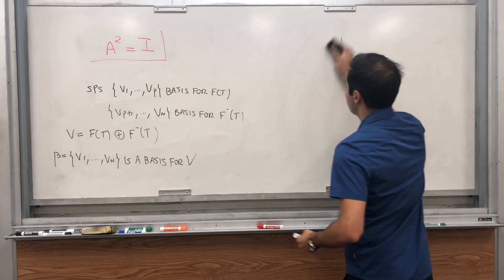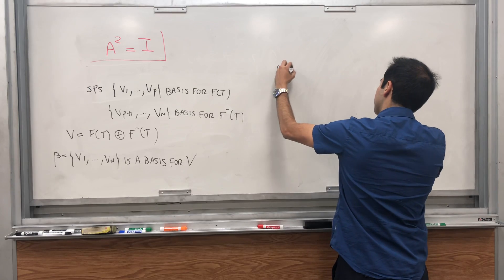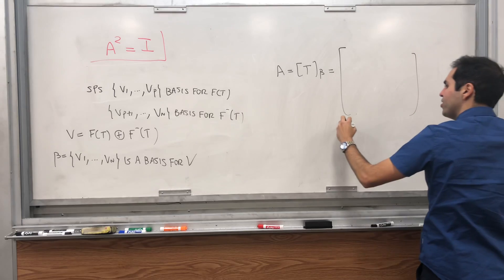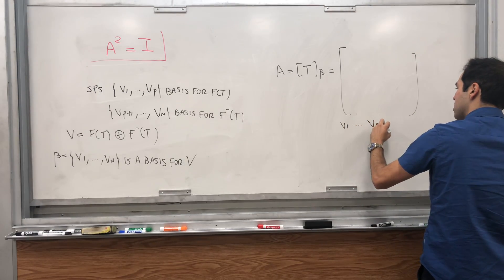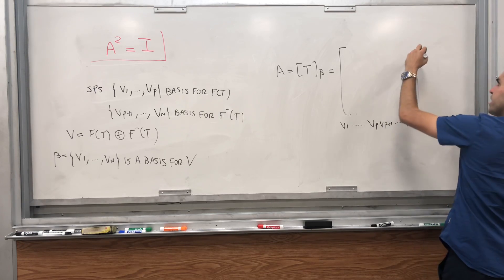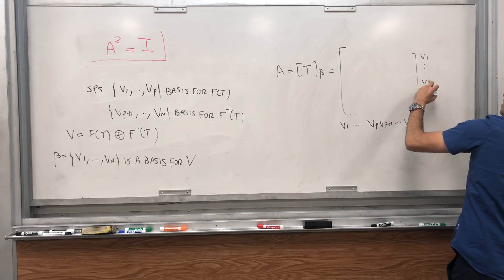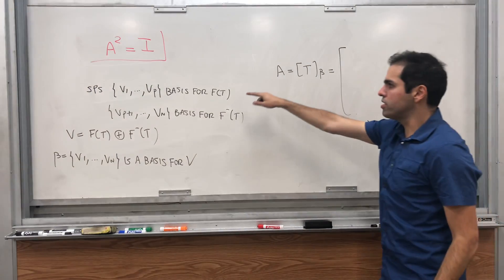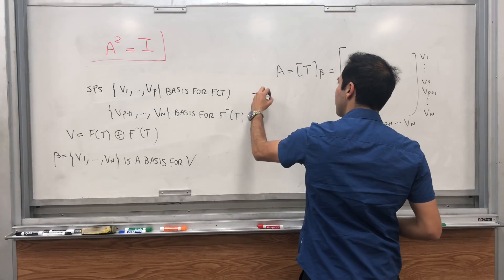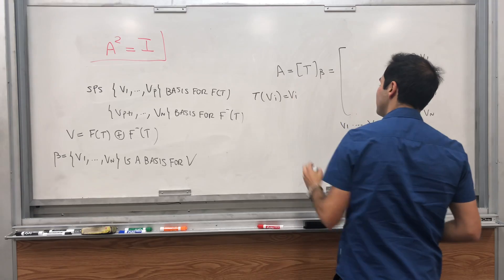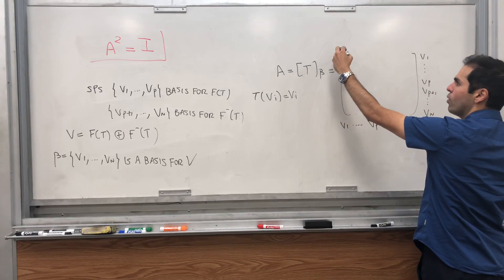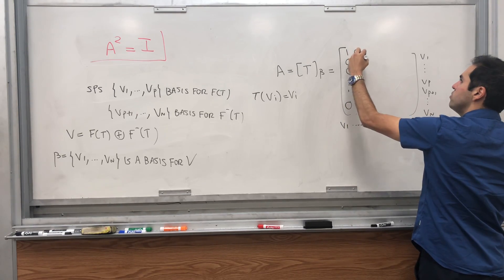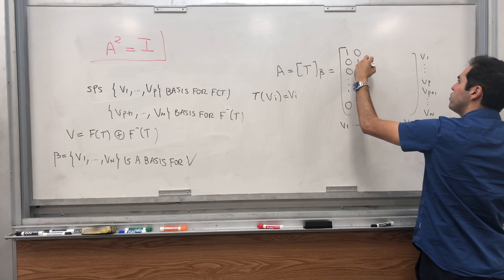Then because it's a direct sum, it turns out, beautiful fact, if you put those two bases together you get a basis for V. So beta, which is V1 up to Vn, is a basis for V. And then we can simply calculate the matrix of T with respect to that basis. And how do you do this? Remember A, which is the matrix of T, you just evaluate T at every basis vector and write this in terms of your basis vectors Vp, Vp+1, da da da, Vn. Now what does T do to the first p vectors? Well it literally does nothing. T(Vi) is Vi.